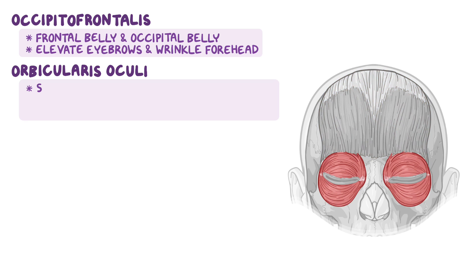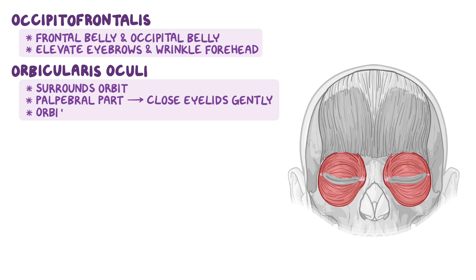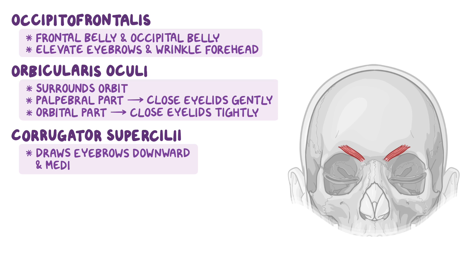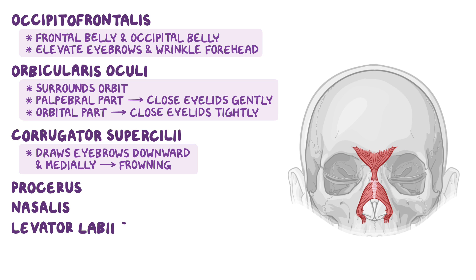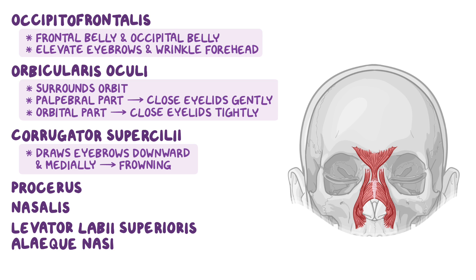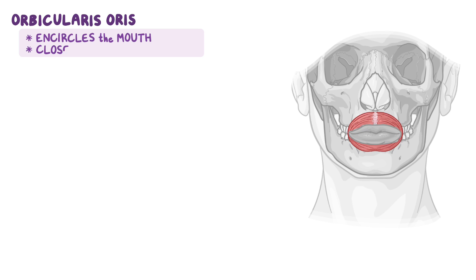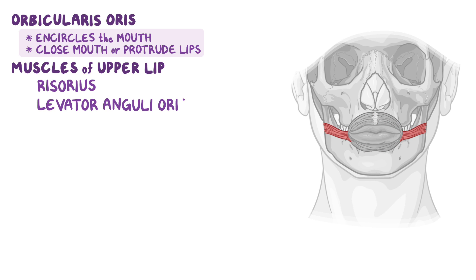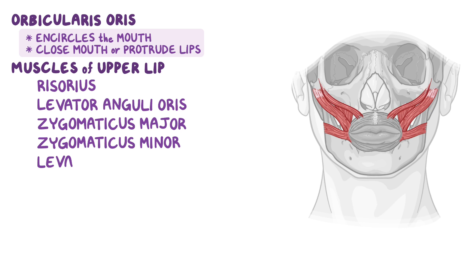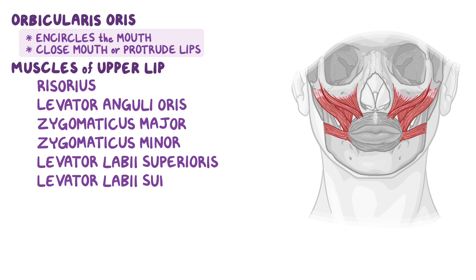The orbicularis oculi muscle surrounds the orbit. Its palpebral part is found within the eyelid and closes the eyelids gently, and its orbital part closes the eyelids tightly. The corrugator superciliae draws the eyebrows downward and medially, which occurs when frowning. The three muscles of the nose are the procerus, nasalis, and the levator labii superioris alaeque nasae — the nasalis and the levator labii superioris alaeque nasae are used to flare the nostrils. The orbicularis oris encircles the mouth and closes it or protrudes the lips. The muscles of the upper lip are the risorius, levator anguli oris, zygomaticus major, zygomaticus minor, levator labii superioris, and levator labii superioris alaeque nasae.